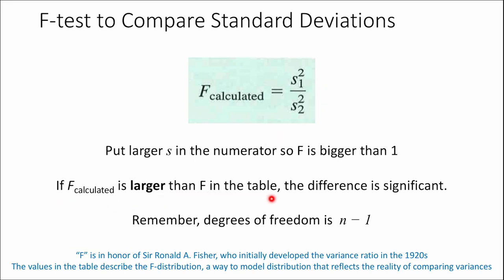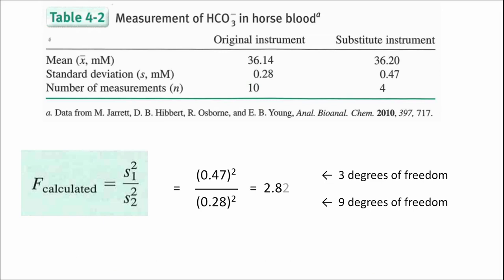Now we're going to compare to numbers in a table. If you calculate a variance ratio and your number is larger than the F in the table, then your difference is statistically significant. If your number is smaller, then your difference is not. We're going to use degrees of freedom for this. So here's the example measurement again — we have our data, we have the formula, we plug numbers in. I take the standard deviation of the measurement on the right and put it on top because it's bigger. Don't forget to square them. The degrees of freedom is the number of measurements minus one — so one set has three degrees of freedom, the other has nine.